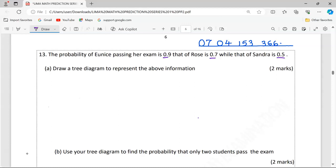The passing of Eunice, that of Ross, and that of Sandra are three independent events. Independent events are events in which the occurrence of one does not affect the occurrence of the other.